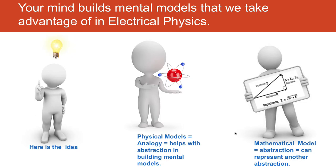Another mental model we often use is mathematics. Mathematics itself is an abstraction — an abstractive model that can be used to represent other abstractions, in this case electrotechnology. In DC circuits, we often use the water flow analogy; it helps build mental models. In the end, we use mathematical models to handle abstraction — one abstraction to handle another. That's another reason why learning electrical physics is difficult, but unless we build mental models and engage with the physics itself, we'll have great difficulty learning electrotechnology.